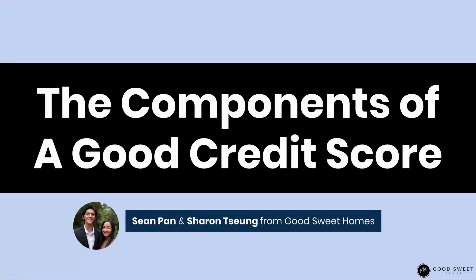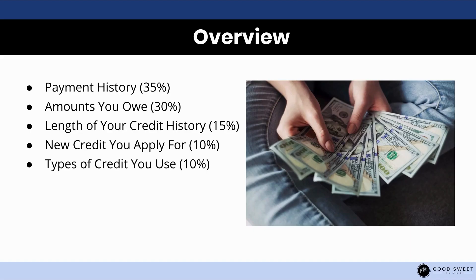In this lecture, we're going to be talking about the different components that build up your credit so that you understand how your credit score is calculated. As an overview, we're going to be talking about the payment history, the amount that you owe, the length of your credit history, new credit that you apply for, and the different types of credit that you use. These are the components and the different fractions that make up your score, and we're going to go into detail for all of them.